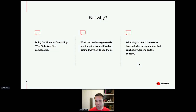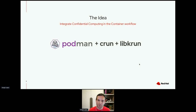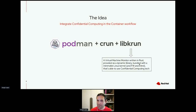We started thinking about ways to make confidential computing more accessible to users. We thought that instead of trying to provide a completely different experience and workflow, we could extend an existing workflow — such as the container workflow which many users are very familiar with — and enable it to actually use confidential computing for running sensitive workloads. We also noticed that we could very easily do that by extending Podman and crun and integrating them with libkrun. libkrun is a virtual machine monitor written in Rust that instead of being a separate binary is provided as a dynamic library, so you can link to it from other programs and instantly gain virtualization and confidential computing capabilities.